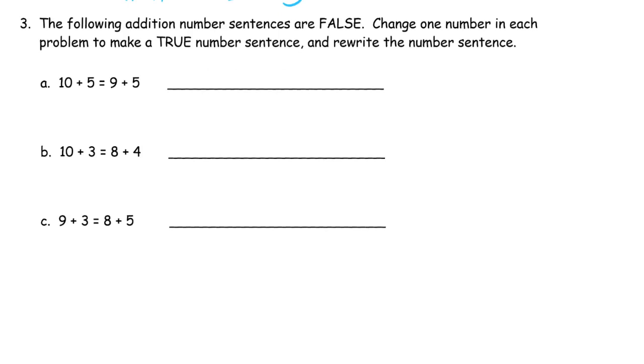The following addition number sentences are false. Change one number in each problem to make a true number sentence and rewrite the number sentence. So here we start with 10+5. So let's keep the 10+5 because that's pretty easy to work with. And that equals 9 plus what? Well, it can't be 9+5 because 10+5 can't be the same as 9+5. To get 15, 10, 5 is 15. And to get 15 to a 9, we need 6 more. So that's what you do. We changed this 5 to a 6 to make it true.